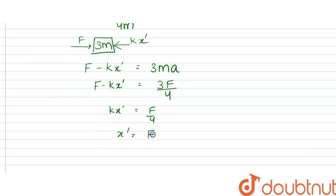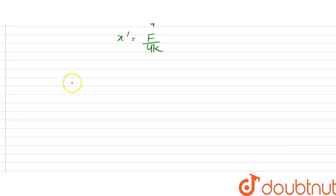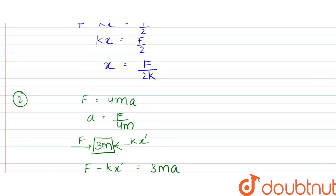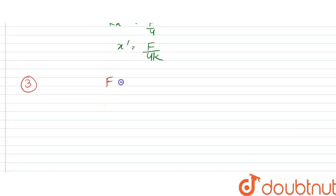So x dash would be equal to F by 4k. Similarly in third case, what we have is m and 3m. So force is equal to 4ma. Acceleration turns out to be the same, that is F by 4m. But here we have mass m, and this is force F, and here it is kx.